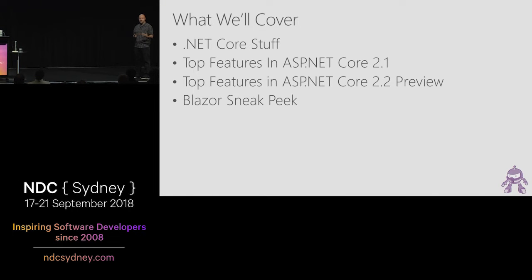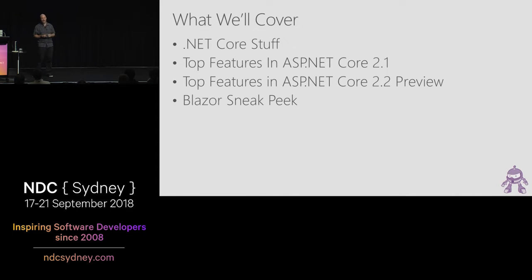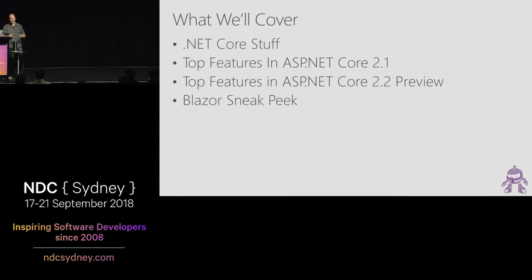We're going to start with some .NET Core general stuff that especially applies to ASP.NET Core developers. We're going to recap some exciting stuff in ASP.NET Core 2.1 from Build timeframe, and then look at ASP.NET Core 2.2. We just shipped a preview last week at .NET Conf. And then at the end, I'm going to take a quick look at Blazor — I have time for an overview to whet your appetite. I'm going to try to pack all this into an hour.